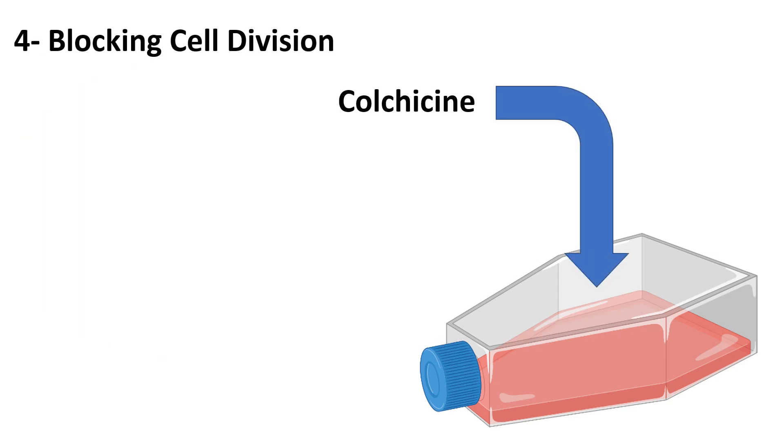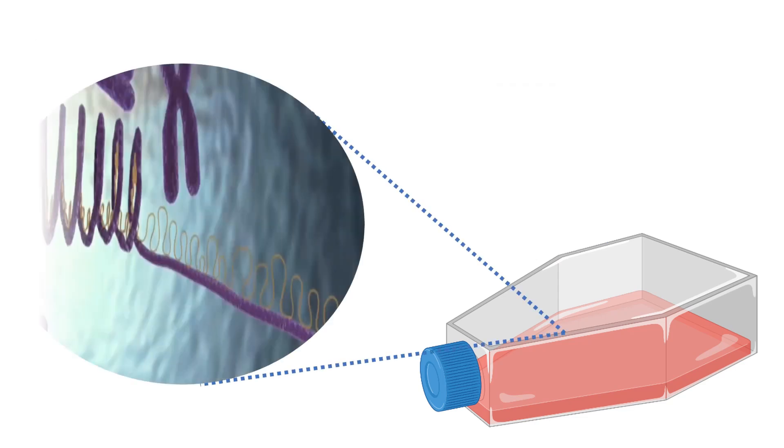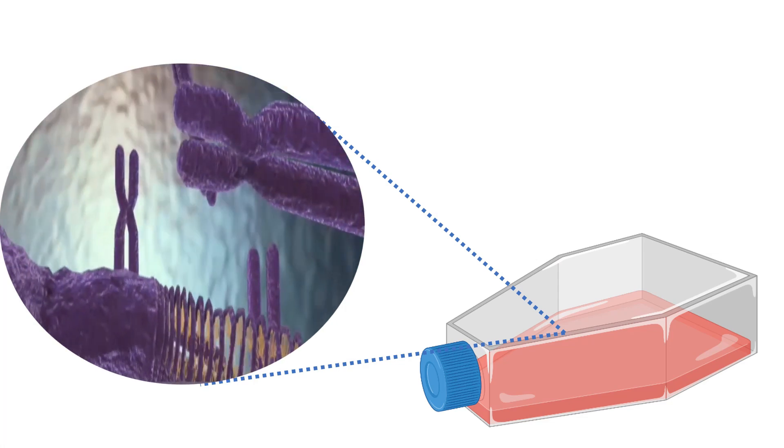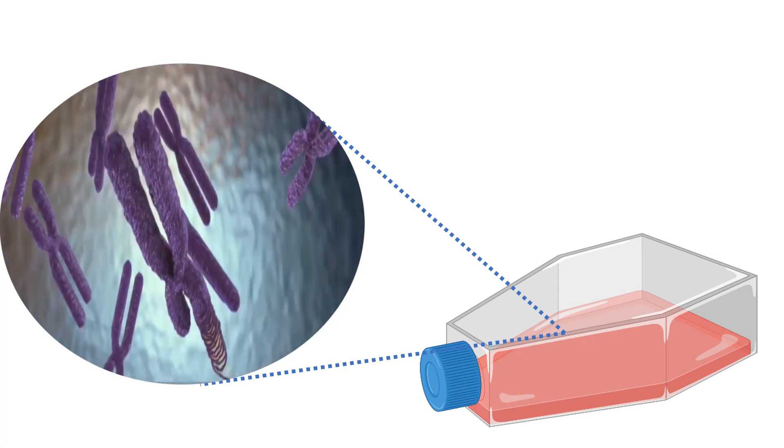The fourth step is blocking cell division. The cells are treated with a chemical substance called colchicine, which blocks cell division in metaphase, where the chromosomes are in their most compact form and consequently they are easily observed under a microscope.